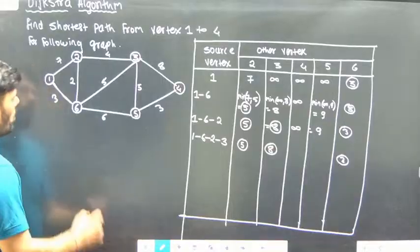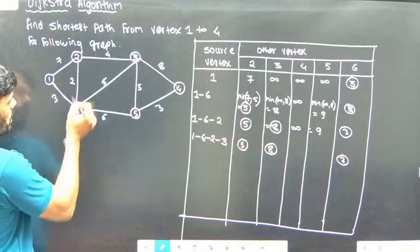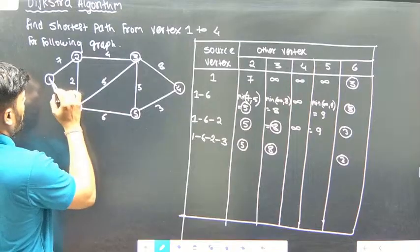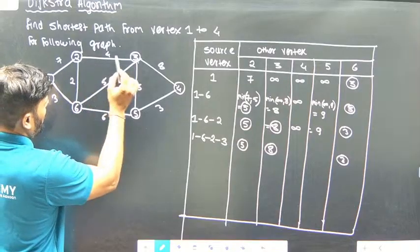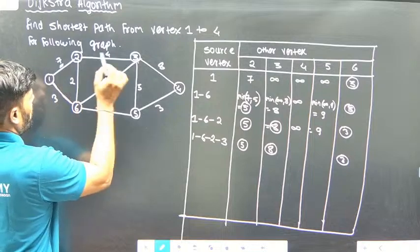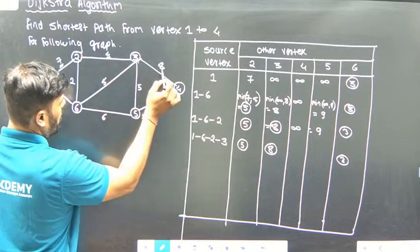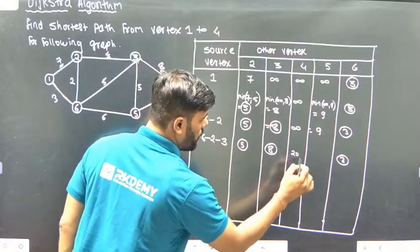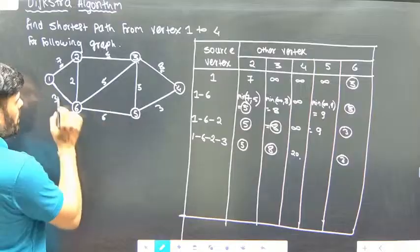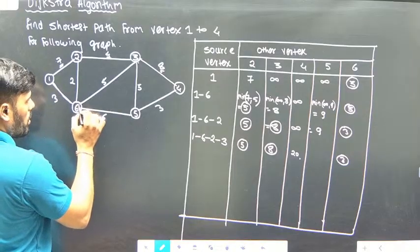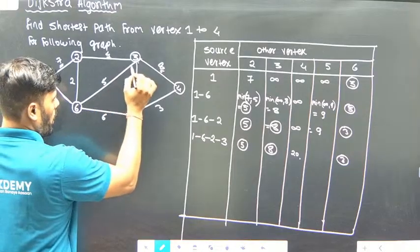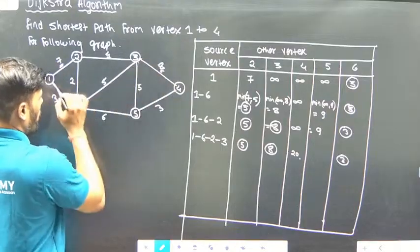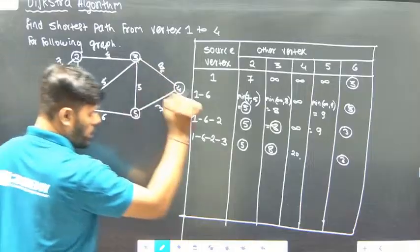Now coming to vertex 4: to go to vertex 4, vertices 1, 6, and 3 are already relaxed. To reach vertex 4, one option is via vertex 3: weight plus 4 equals 11, plus 8 gives 20. Another option is via vertex 3: 11 plus 5 equals 8, then 8 plus 8. And via vertex 6: t plus 5 equals 8, then 8 plus 8 equals 10. So we check the minimum.